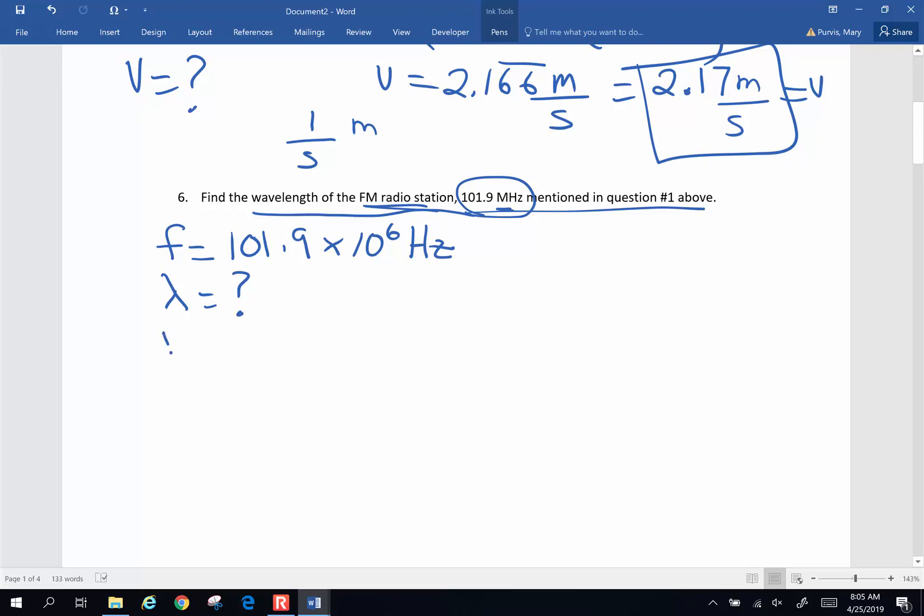And it says at the top of the homework assignment, for radio waves, light waves, use the velocity of light as 3 times 10 to the 8th meters per second for that velocity of light. So velocity is frequency times wavelength. We're going to do a little algebra here. So I'm solving for wavelength. Divide both sides by frequency. Frequency is going to cancel. Wavelength is velocity over frequency.